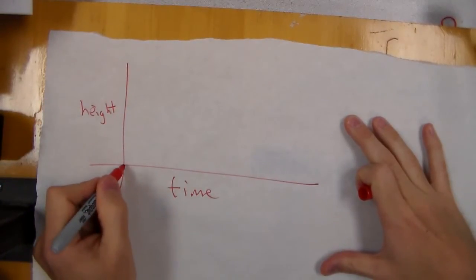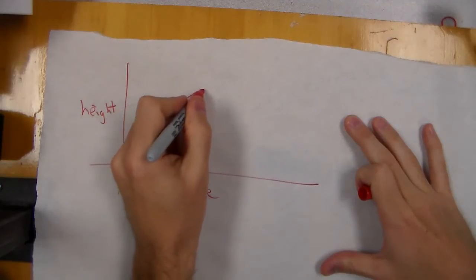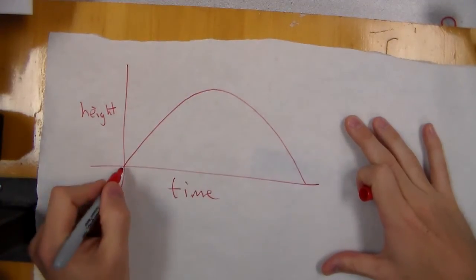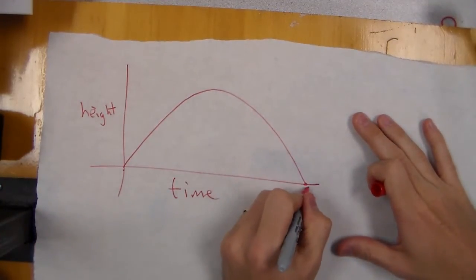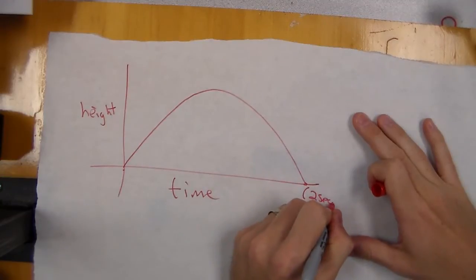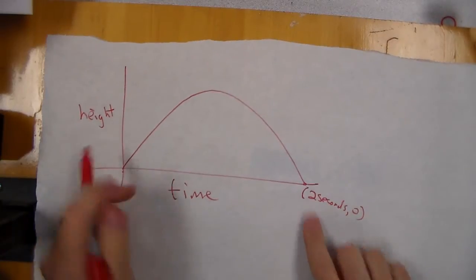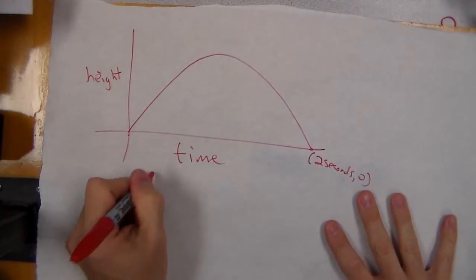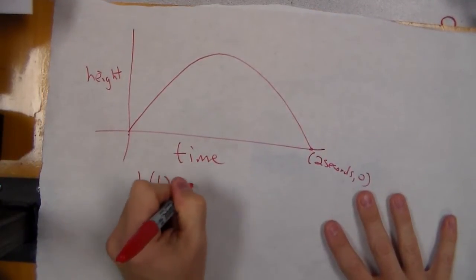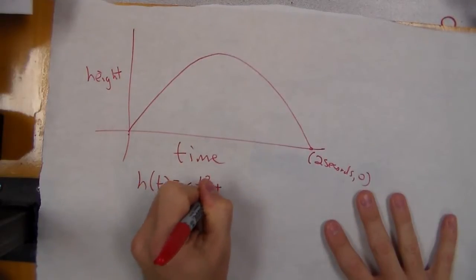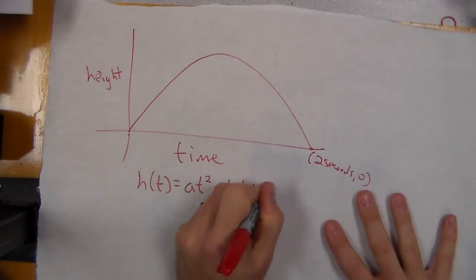As we launch the catapult, the ping pong ball comes up and comes back down, with time being zero here, and let's say it spent two seconds in the air. So we know we have the function h(t) = at² + bt + c.